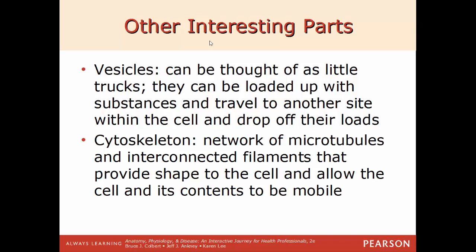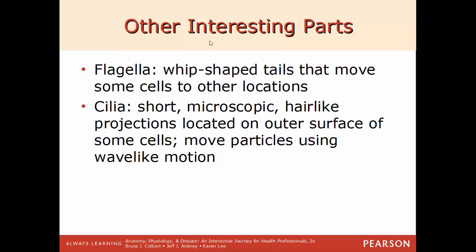When immune cells engulf bacteria through phagocytosis, the material is bound to a lysosome to be destroyed. Other cell structures include vesicles — little vehicles that move material into and out of the cell; the cytoskeleton, a large network of interconnected microtubules that provide the shape of the cell, acting as the inner scaffolding; flagella, a long whip-shaped tail that helps the cell move; and cilia, very short hair-like structures also allowing for movement. Flagella are very long and usually found in low numbers, while cilia are short and found in very high numbers grouped together.